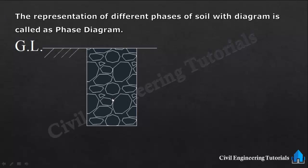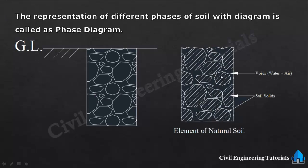If we take a portion of soil into a closed system, it will look like this. This is the element of natural soil. These are the soil particles and these are known as soil solids. Now these are the free spaces between soil solids and these free spaces are known as voids or void space.